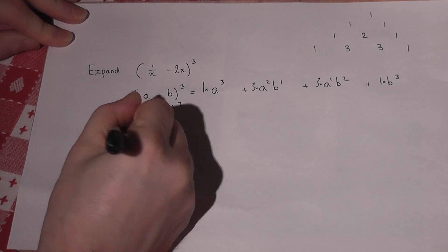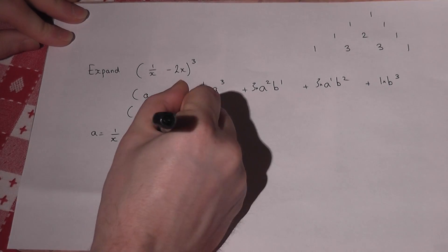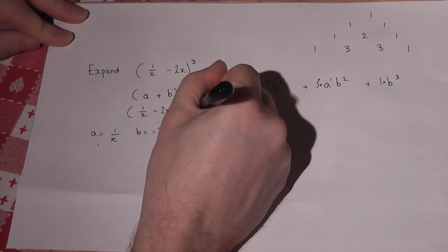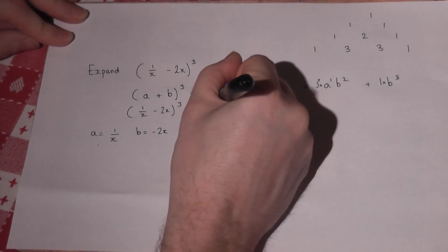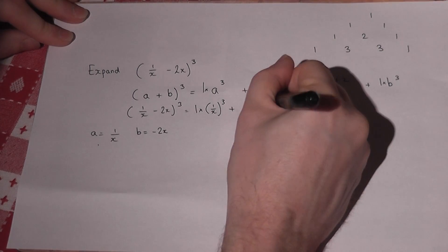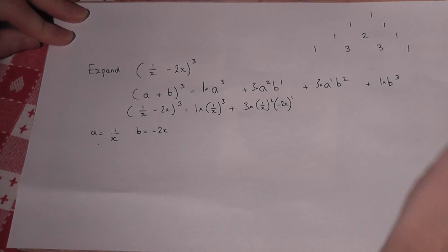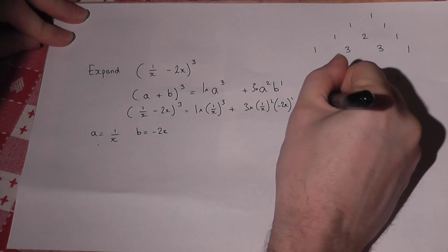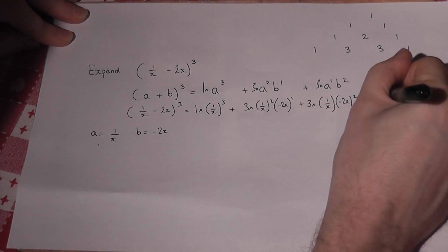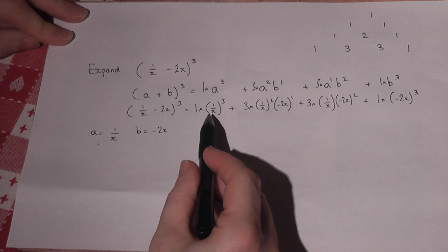So a is 1 over x, and b is minus 2x. I then place these into the general expansion. So a is 1 over x — that's (1/x) in brackets cubed. Then 3 lots of (1/x) squared times (minus 2x) to the power of 1. Then 3 times (1/x) times (minus 2x) squared, and finally 1 lot of (minus 2x) cubed. Each part has been placed carefully within a bracket.